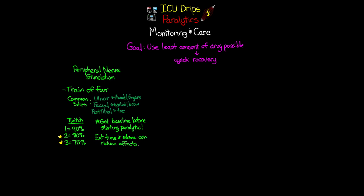If you notice decreasing or diminishing twitching but haven't made any changes to the medication — especially for patients who had been achieving a good twitch at a stable rate — you may need to increase the output on the stimulator over time. This gives us an objective, quantifiable way to assess how much paralytic our patients need.